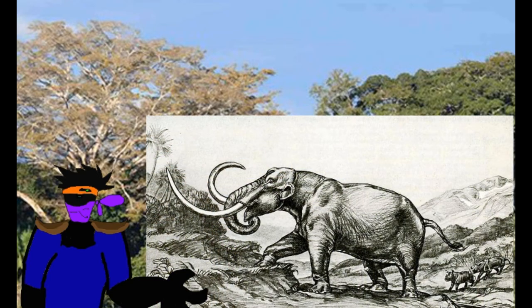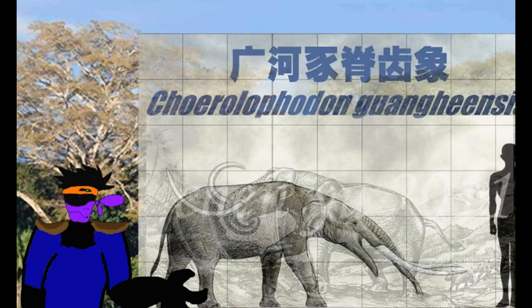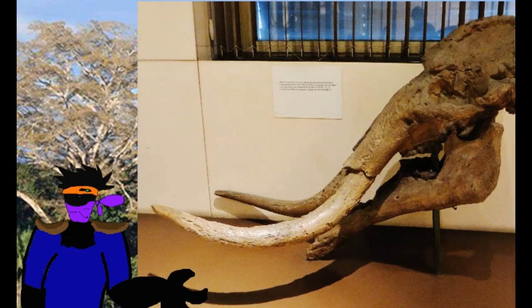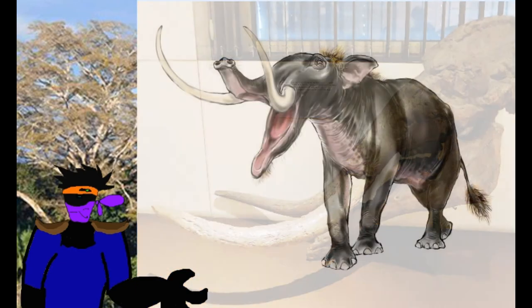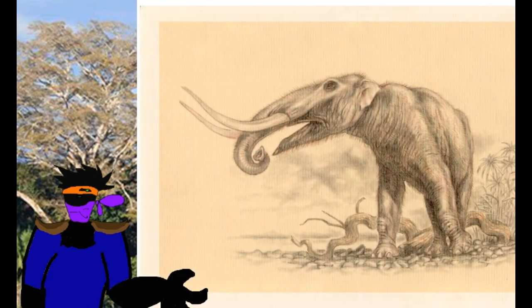Cholophodon lived during the Miocene in Eurasia. Some fossils have been found in Southeast Europe, Iraq, Iran, the Indian subcontinent, and China. It was a smaller proboscidean with very low and flat skulls. The small lower tusks are believed to have been divergent, but otherwise the genus might represent the ancestral form of the Elephantida.